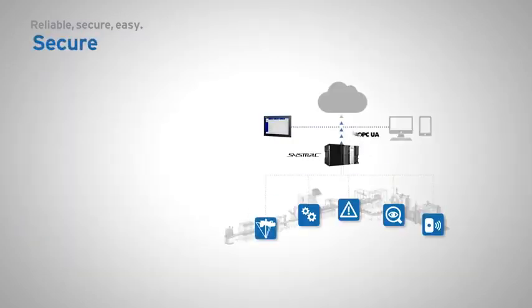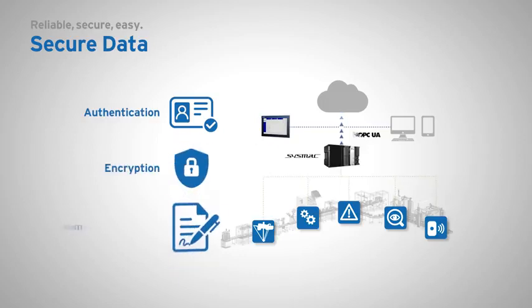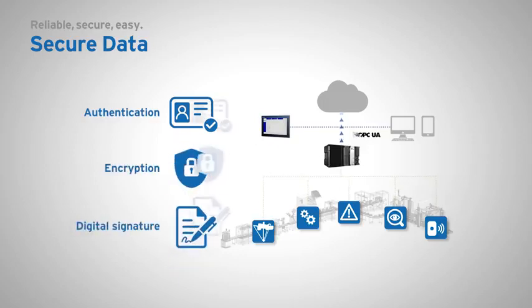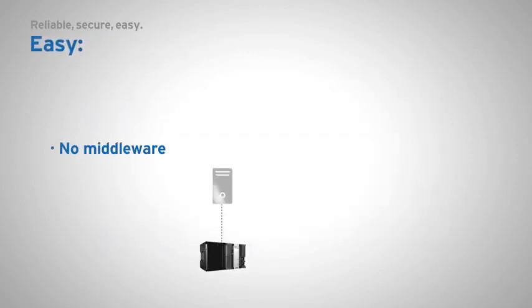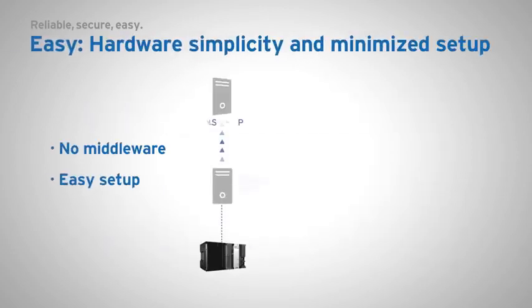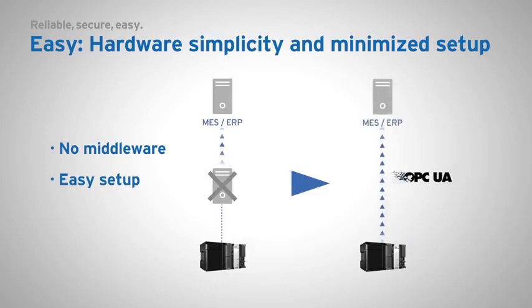It ensures secure exchange of information by providing access control, authentication and encryption. OPC UA eliminates the need for hardware middleware by directly connecting the controller variables to the host system. It simplifies the complete setup.